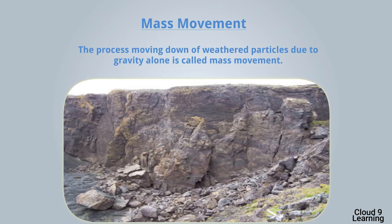Now we will study about mass movement. The process of moving down of weathered particles due to gravity alone is called mass movement, also known as mass wasting. The weathered rock material starts moving along the slopes due to gravity and accumulates near the foothills on gentler slopes, forming a conical-shaped heap at the foothills. This process has been happening for years.